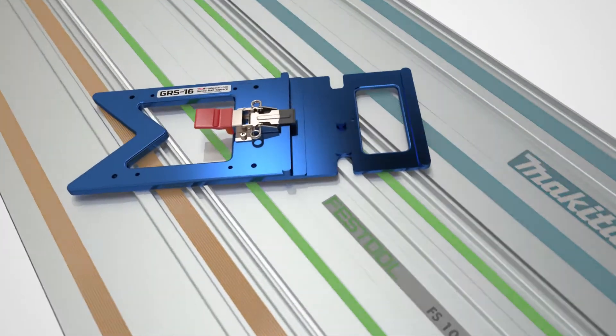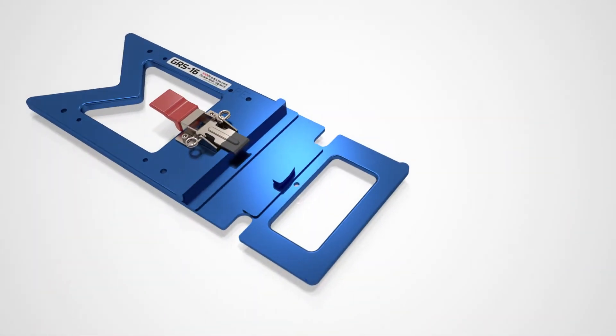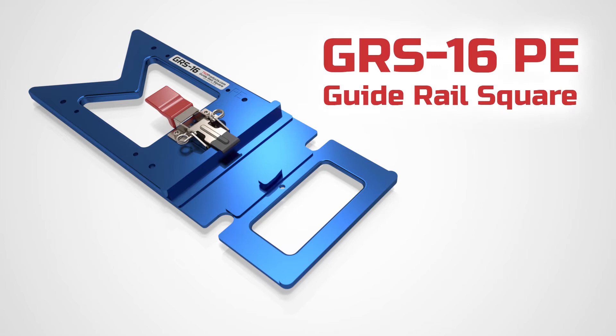Presenting a fast, simple, and accurate way to achieve square cuts with your track saw, the GRS16 PE Guide Rail Square.